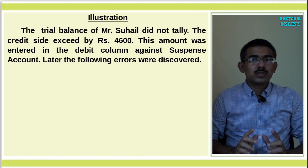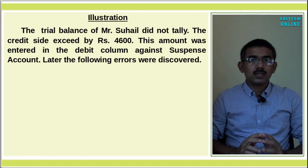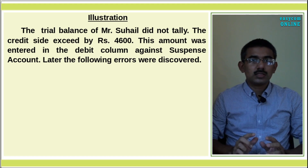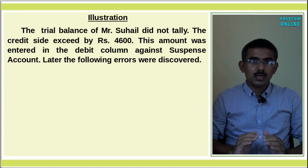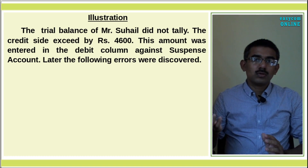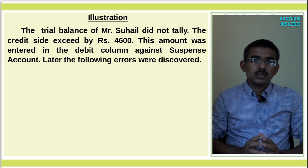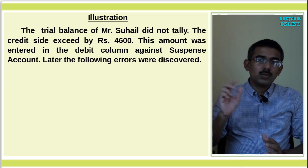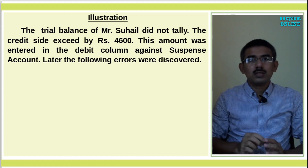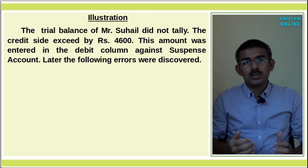The trial balance of Mr. Suhail did not tally. The credit side exceeded by Rs.4,600. This amount was entered in the debit column against the Suspense Account. Later, the following errors were discovered. The Suspense Account was opened with Rs.4,600 on the debit side, and the final account preparation proceeded.